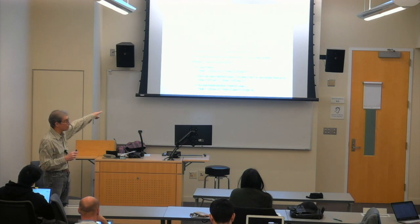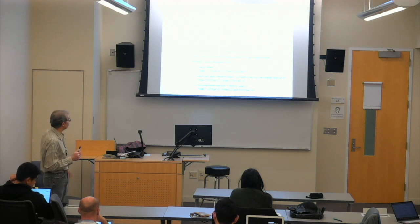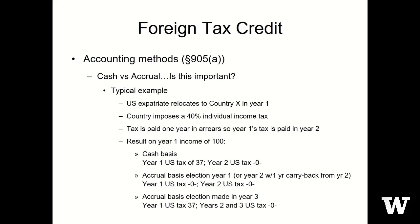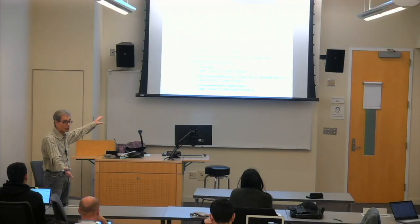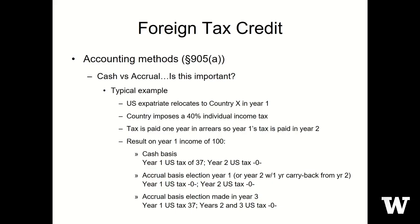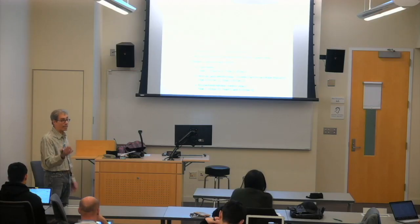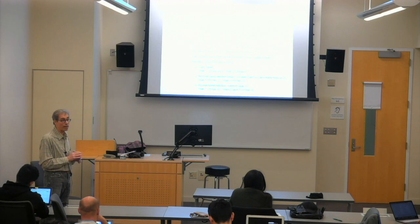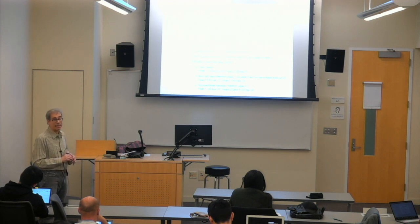If he elected the accrual method in either year one or year two, then he's able to claim the 40% foreign tax credit for year one. If he elects the accrual method, even though the tax is paid in year two, he can claim it for year one, and his U.S. tax for year one is zeroed out. The point is that this election for accrual can be very significant in many cases. I've seen that happen quite often. But because once you make the election you're on it forever, so to speak, the election shouldn't be made lightly.